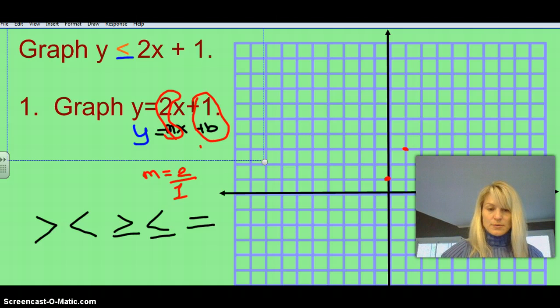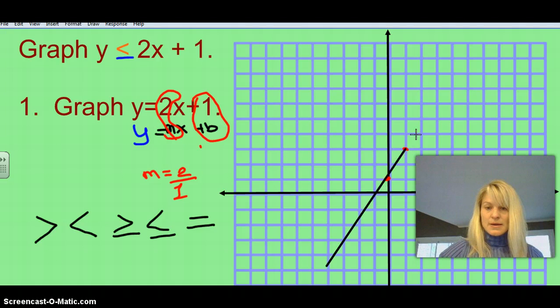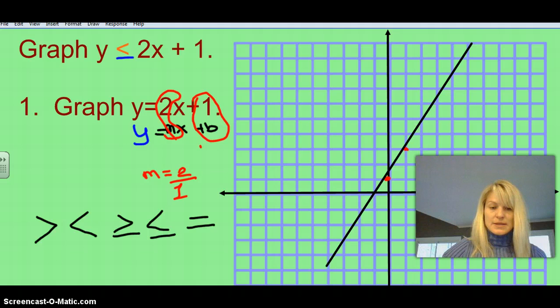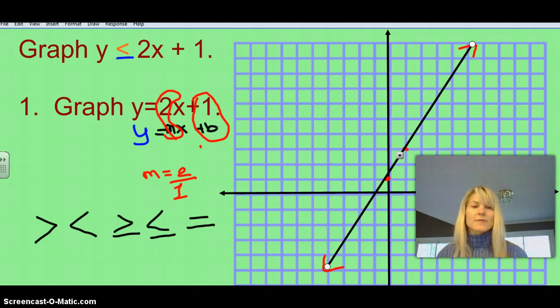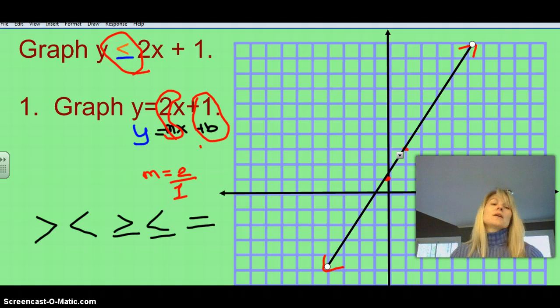And then we're just going to draw our line through there. So here comes my line, and make sure your line extends to the whole graph, and it should have some sort of arrows on the end. I want to make mine go through those points a little bit better. We'll put some arrows up here because it goes on forever. Okay, so the first part of this is like we normally have, but now let's address that there's this less than or equal to sign.